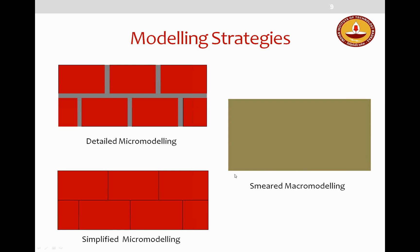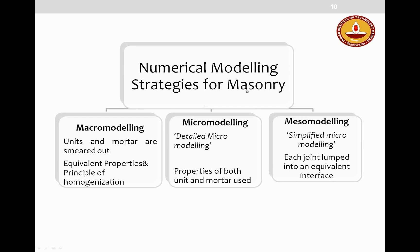These modeling strategies can be summarized in a flowchart: numerical modeling strategies of masonry are classified into macro-modeling, detailed micro-modeling, and simplified micro-modeling. In macro-modeling, units and mortar are smeared out with equivalent properties assigned via homogenization. In detailed micro-modeling, properties of both unit and mortar are used. In simplified micro-modeling, units are modeled as expanded and each joint is treated as an equivalent interface.